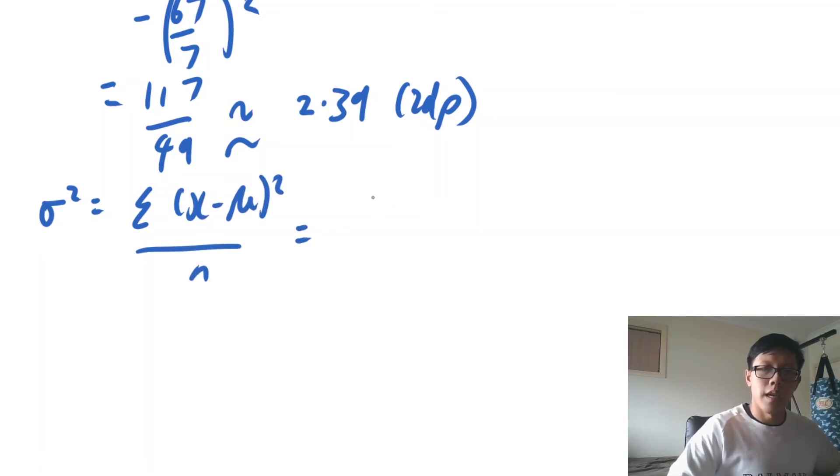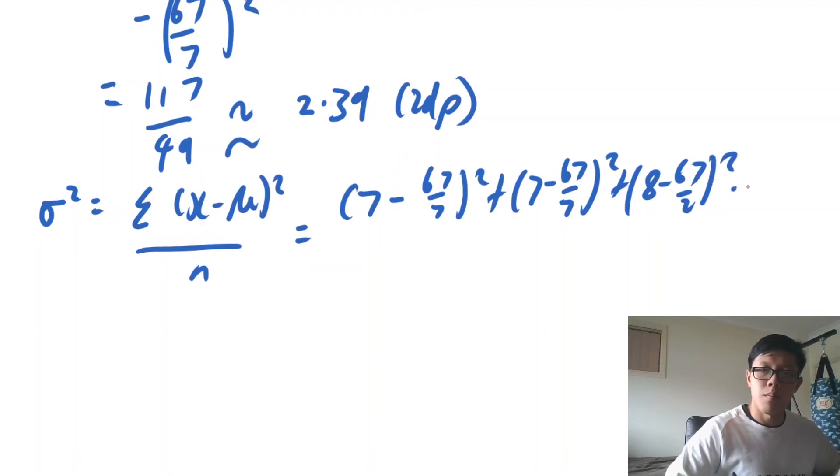We would have 7 take away 67 on 7 squared plus 7 again minus 67 on 7 squared plus 8 take away 67 on 7 squared blah blah blah all the way to the 14th student and then we divide it all by 12.